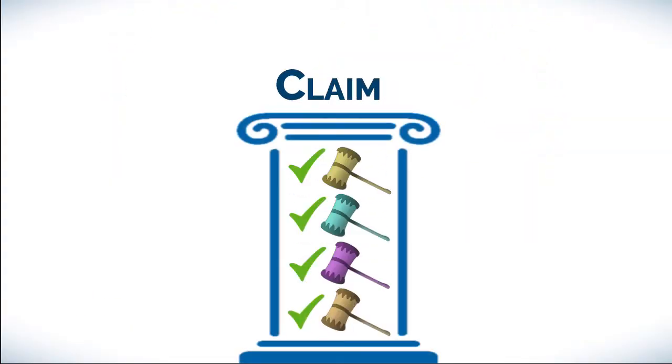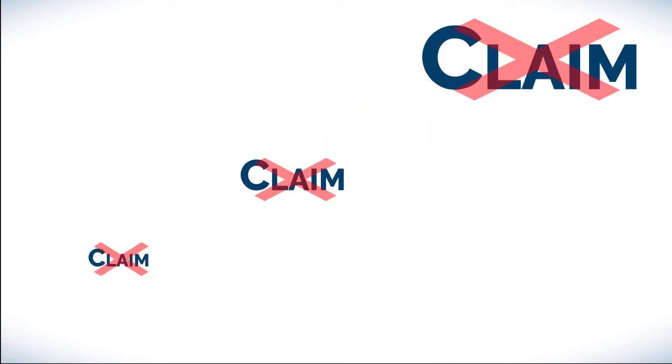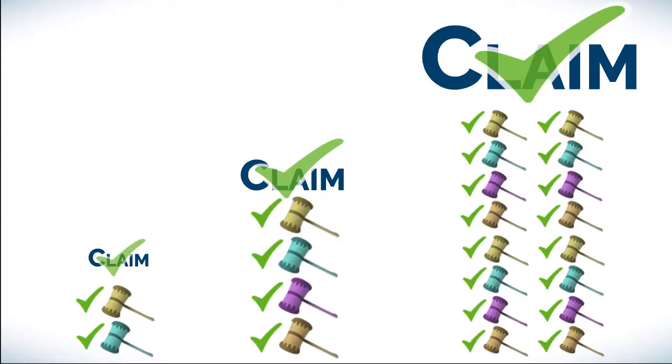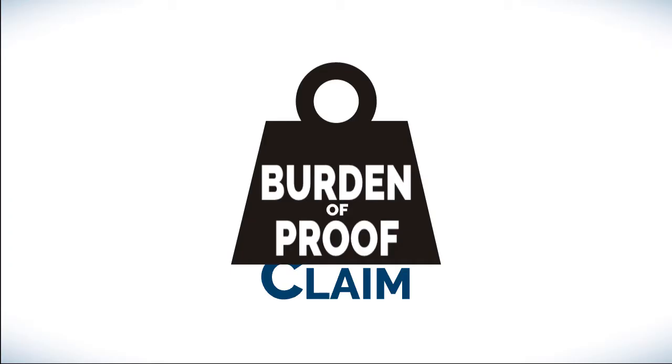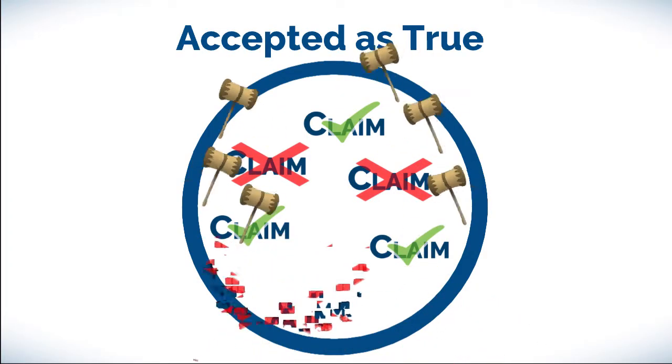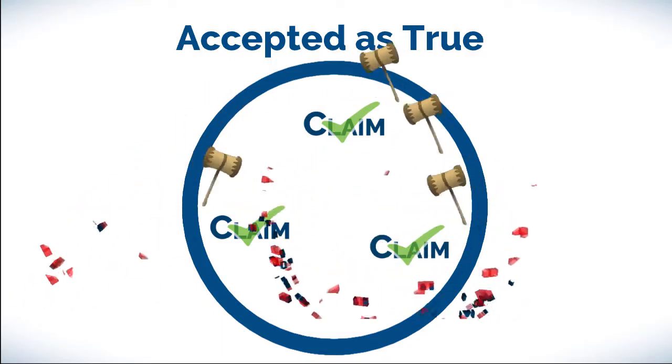Because science begins by assuming everything is wrong, a reasonable amount of evidence is always required before tentatively accepting the claim as true. This puts the burden of proof squarely on the claim itself, effectively limiting the possibility of mistakenly accepting false claims as true.